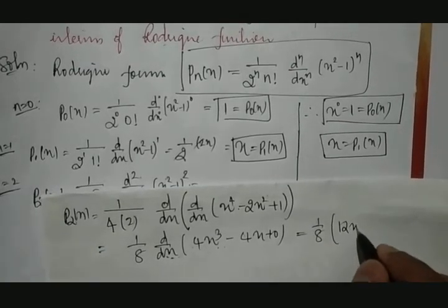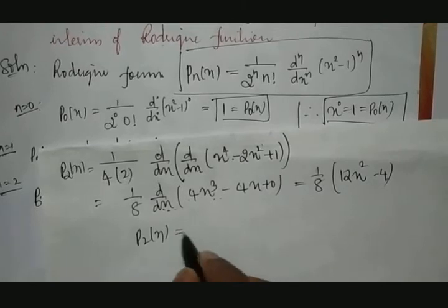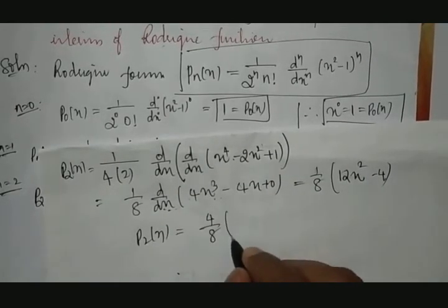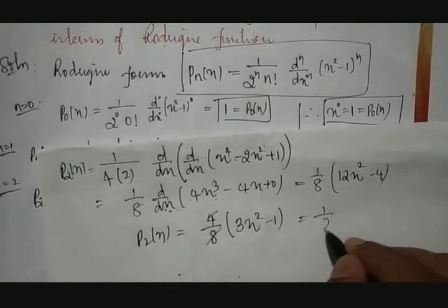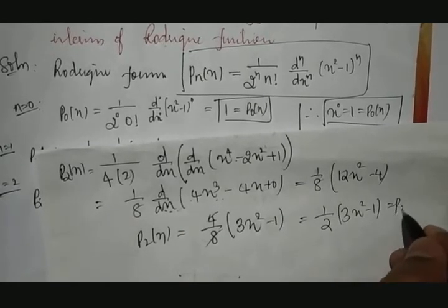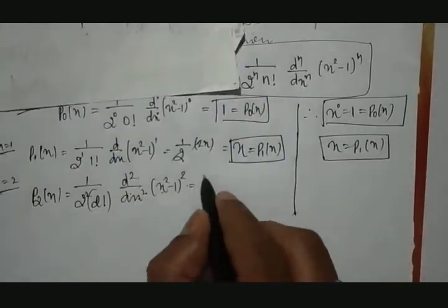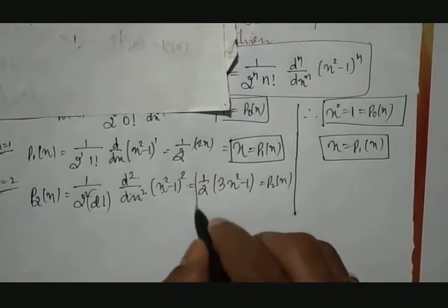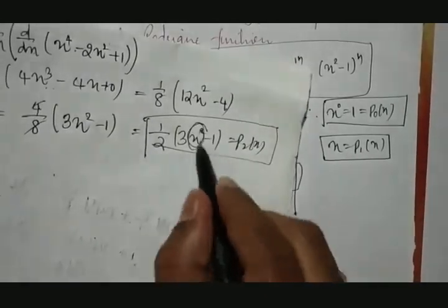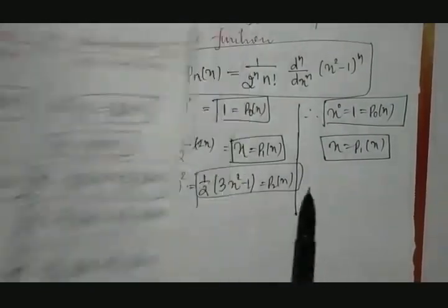Taking the second derivative of 4x³ - 4x gives 12x² - 4. Therefore P₂(x) = (1/8)(12x² - 4). Taking 4 as common from the bracket gives 3x² - 1, so P₂(x) = (1/2)(3x² - 1). This is the same result as from the Legendre polynomial. From this, x² can be expressed as (1/3)P₀(x) + (2/3)P₂(x).